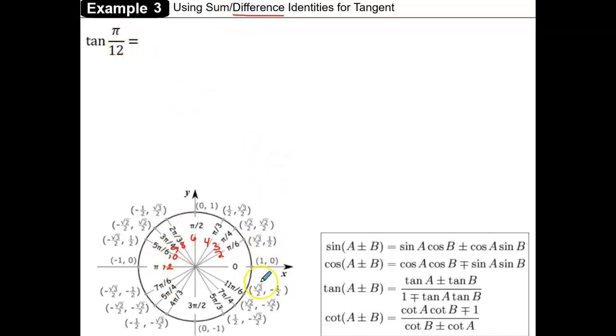I'm going to need a difference identity. I'm going to subtract two angles to get pi over 12, and it doesn't matter which two I pick as long as they subtract to equal pi over 12. For example, we could do 5 pi over 6 minus 3 pi over 4, or 3 pi over 4 minus 2 pi over 3, or pi over 3 minus pi over 4.